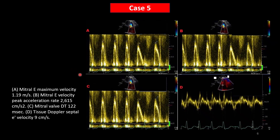Here we have a patient with atrial fibrillation. As you can see, those findings have been shown here. Does the patient have elevated left atrial pressure or not? What are your criteria for reaching this conclusion?